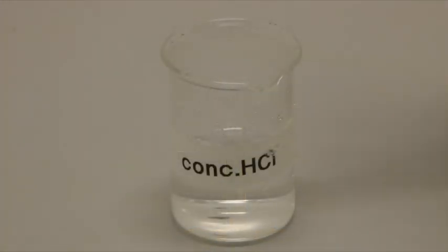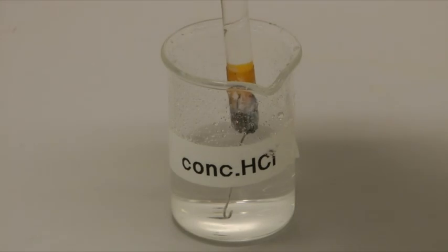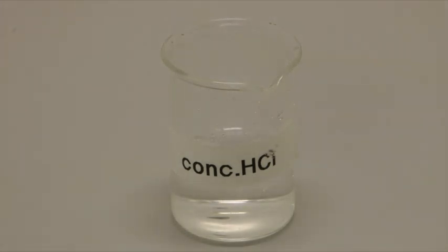Then the looped end of the wire should be placed in hydrochloric acid. In this case we are using concentrated acid, but it's more likely that you will use dilute acid which is often just as effective.